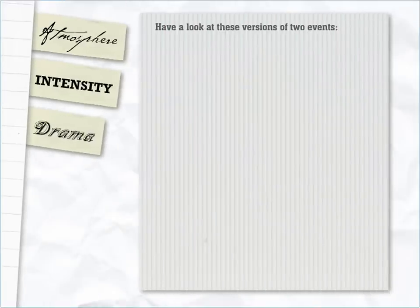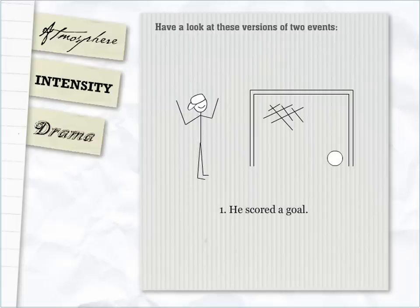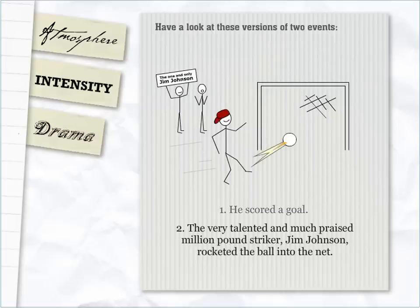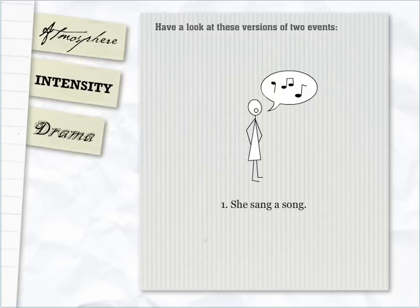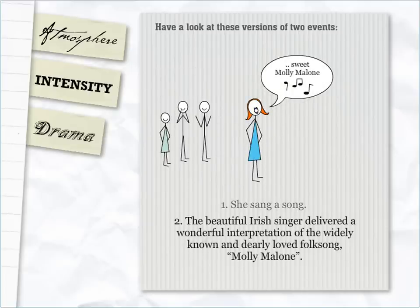Have a look at these versions of two events. First: 'He scored a goal.' Compare that to: 'The very talented and much praised million pound striker Jim Johnson rocketed the ball into the net.' And: 'She sang a song.' Versus: 'The beautiful Irish singer delivered a wonderful interpretation of the widely known and dearly loved folk song Molly Malone.'